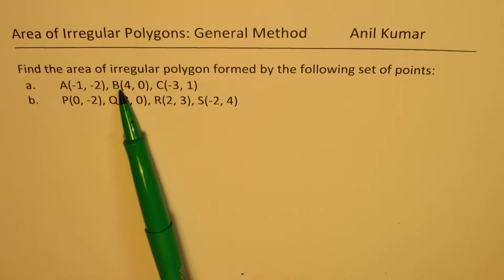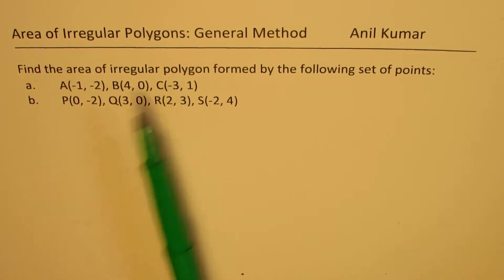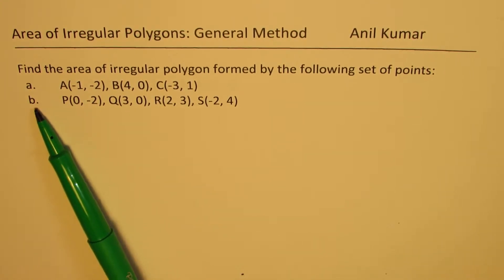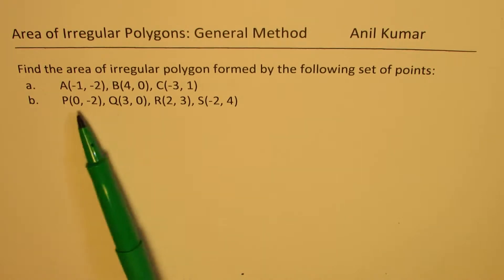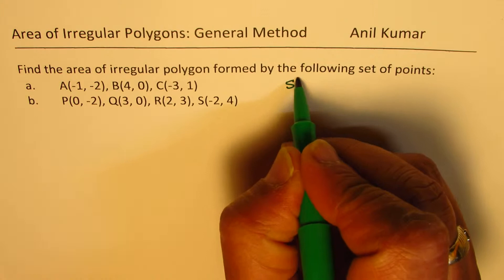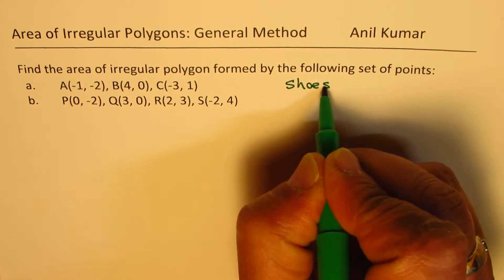In the first case, we are talking about a triangle ABC, and in the second case, we'll talk about a quadrilateral with four vertices. The concept here is to use a method which is called shoestring method.